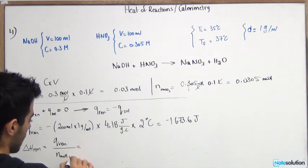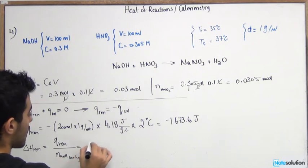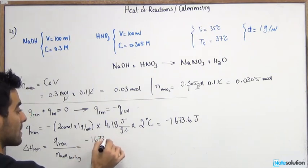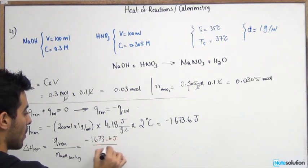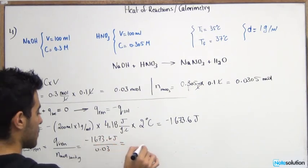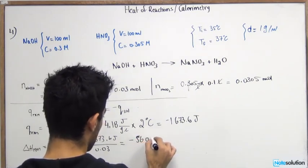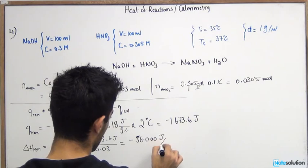So delta H reaction is going to be equal to Q reaction over the number of moles of limiting reactant. So that would give you negative 1673.6 joules over 0.03. That should give you negative 56,000 joules per mole.